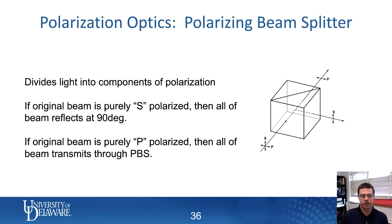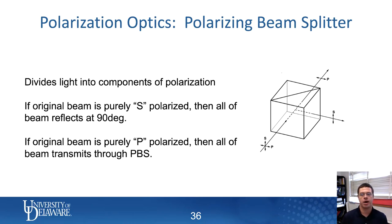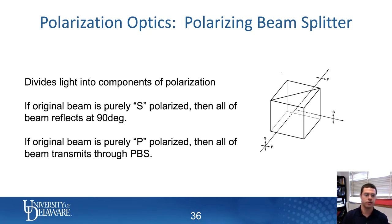Let me talk about a specific type of optics: polarization optics, specifically a polarizing beam splitter. These are optics designed to split apart a beam by which portion of the light is in the x and which portion is in the y direction. I've written s and p here to denote different directions that are perpendicular to the direction of travel. S and p are basically the equivalent of x and y — just two perpendicular directions.